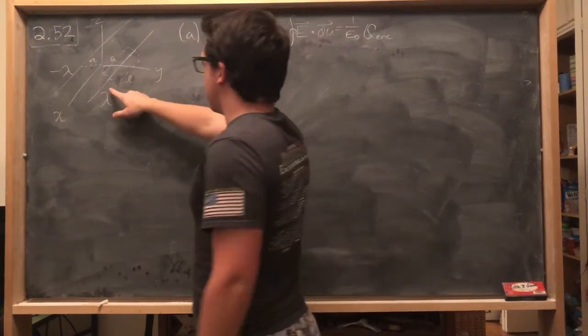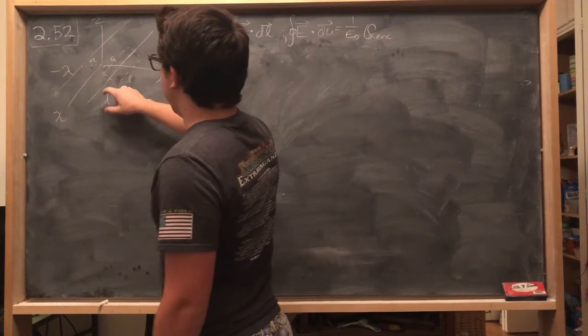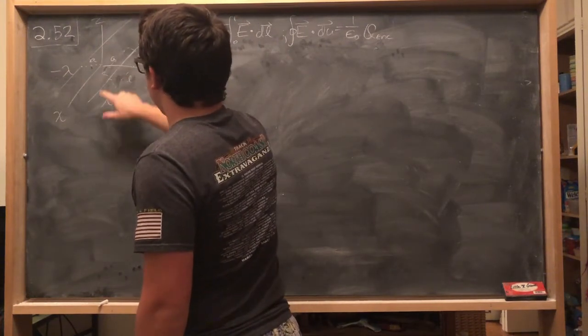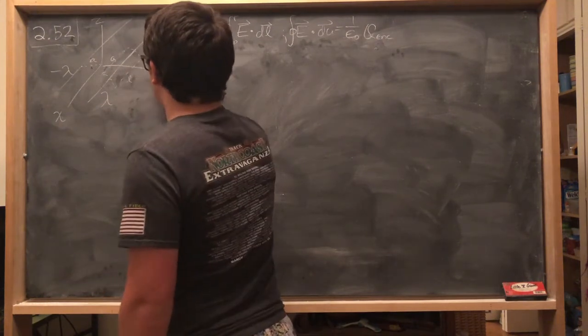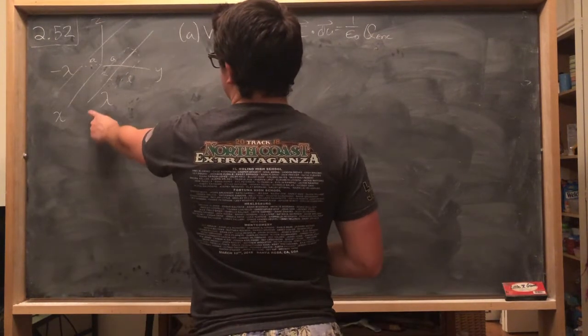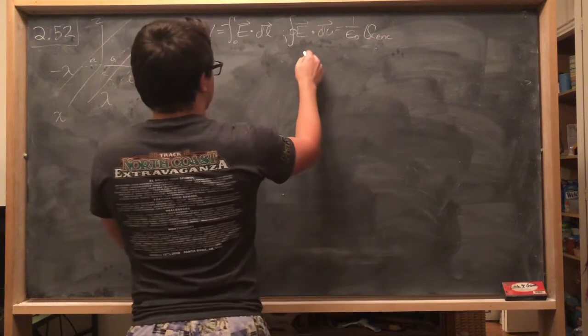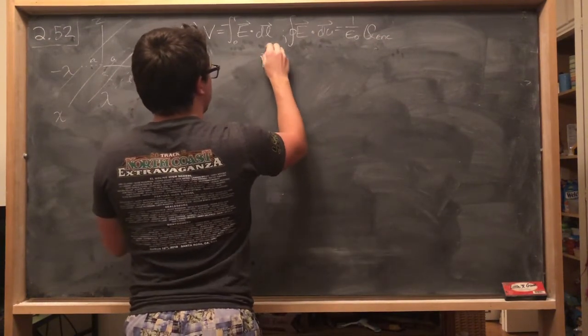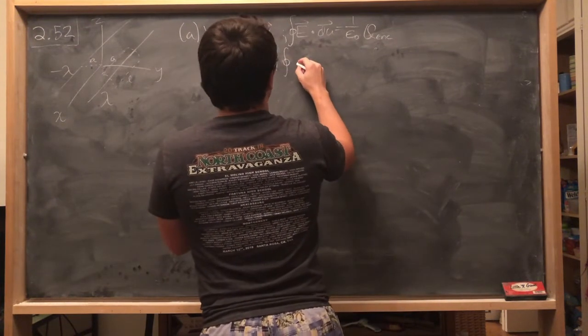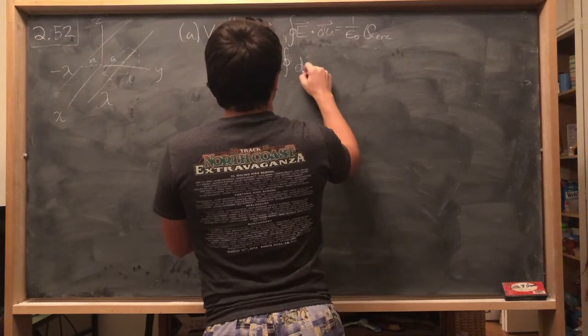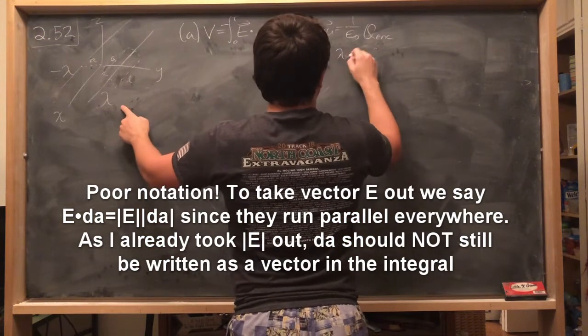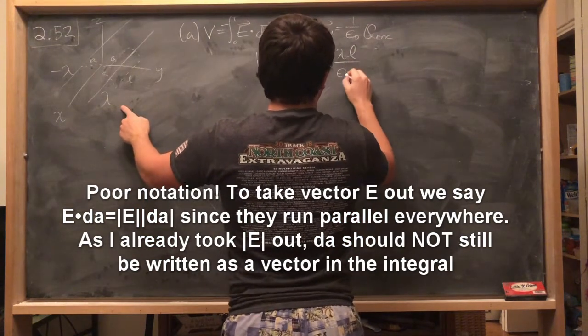So I drew a Gaussian surface around one of the lines, and we're putting a cylinder over it, centered at the line, and we'll just say it's like a length L. And so then if we want to calculate the electric field for the positive wire, then what we would do is we take out this E, and we'd say the magnitude of that times DA is equal to lambda L over epsilon naught.